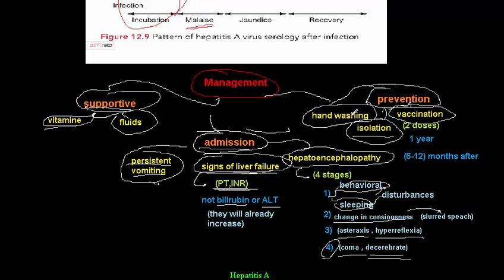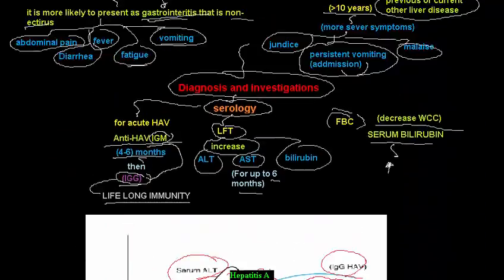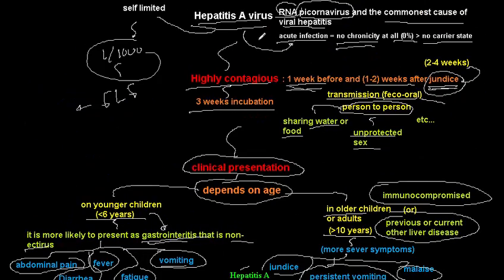There is a vaccination for hepatitis A virus — two doses: the first at one year of age, and the second dose six to twelve months after the first. It provides approximately 20 to 30 years of protection against hepatitis A and possibly lifelong immunity.